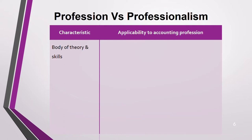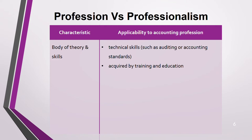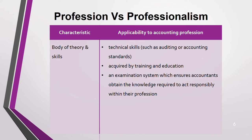Applying the characteristics to accounting: for theory and skills, accountants have technical skills — auditing, accounting standards from AAA, SBR, and financial reporting. We also need training and education, whether from college or self-study, plus practical experience. An examination system exists — every profession has one. And we maintain competence through Continuing Professional Development, because knowledge gained years ago becomes outdated, so it must be continually updated.